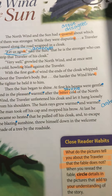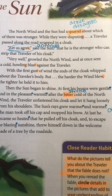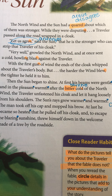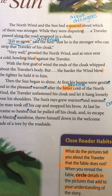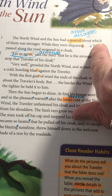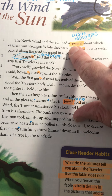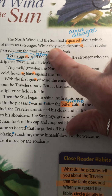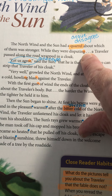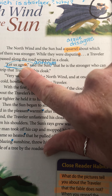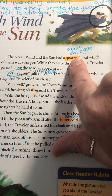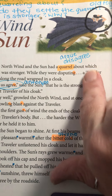Paragraph one: the north wind and the sun had a quarrel about which of them was stronger. While they were disputing, a traveler passed along the road wrapped in a cloak. Let us agree, said the sun, that he is stronger who can strip the traveler of his cloak. We've got the word 'quarrel' here, and trying to figure out what it means — the text says 'disputing,' which sounds like disagreeing. And then 'let us agree' gives an antonym. So quarrel means argue or disagree, based on context clues.